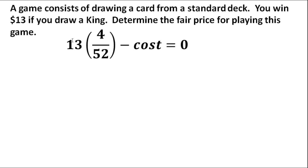In order for it to equal 0, we're going to have to charge just the right amount. So 13 times 4 divided by 52 gives us 52 divided by 52, which is just 1. So 1 minus the cost should equal 0.